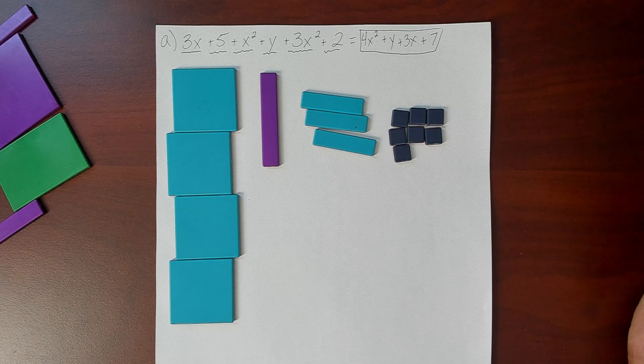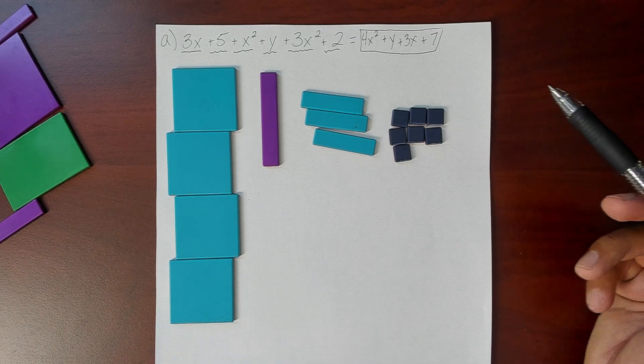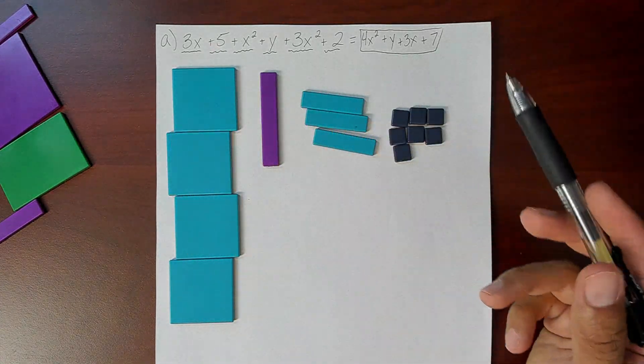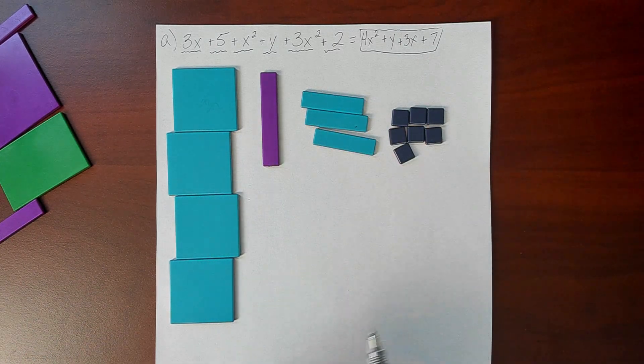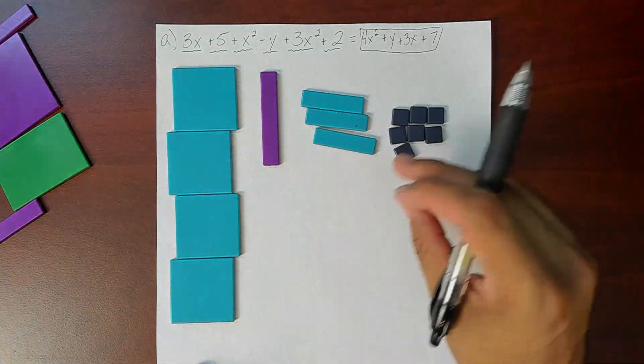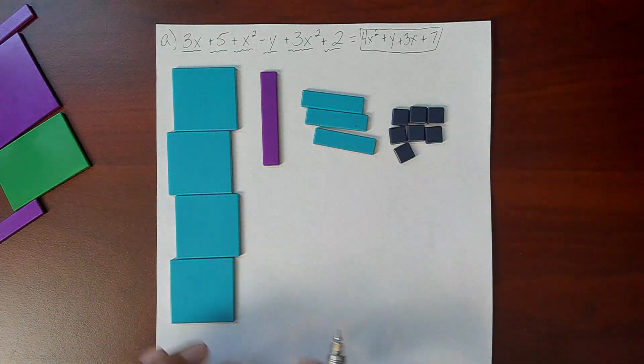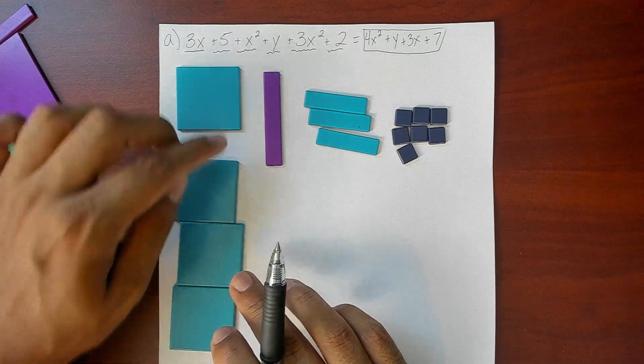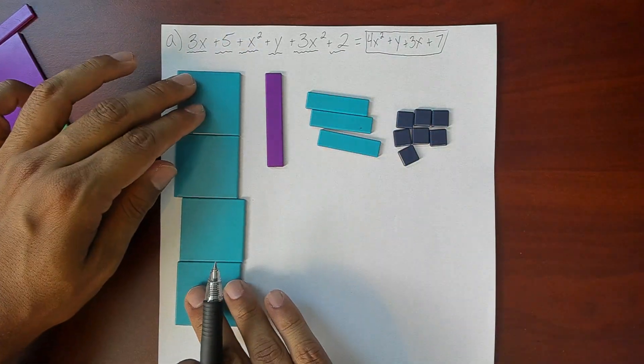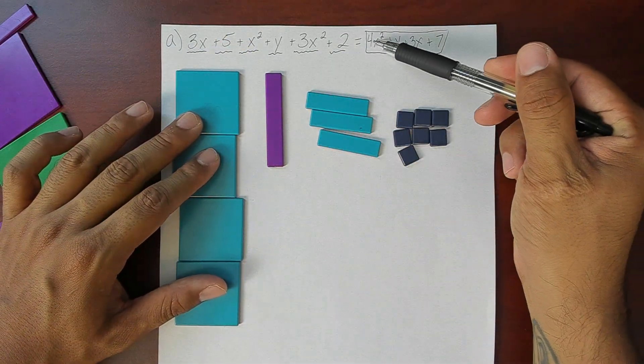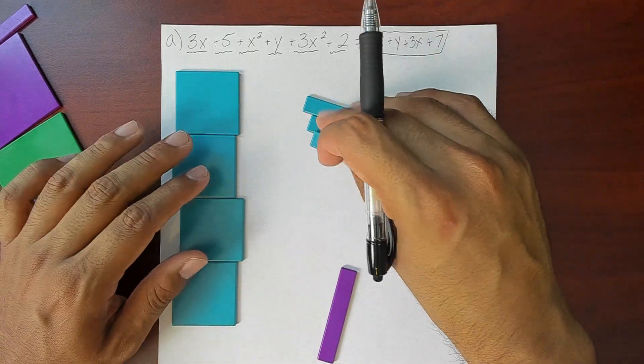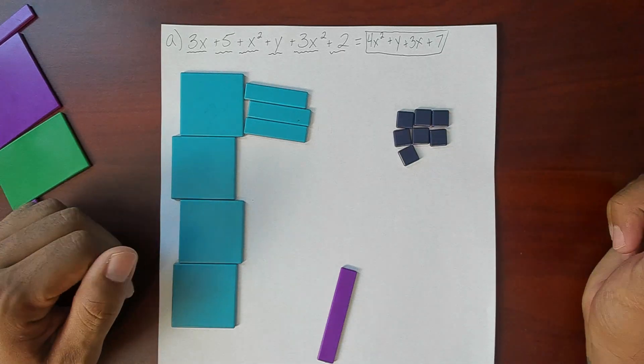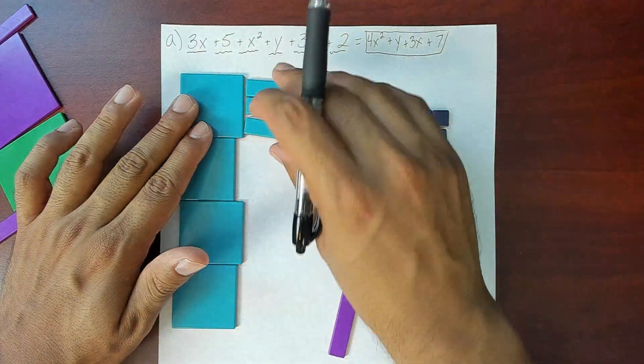This means this answer right here is our simplified expression of the one we started with. All we did here is we combined any like terms, or basically any like tiles together. And that's why algebra tiles are so nice because you can group them and you can visually see why an x squared plus three x squared tiles they're going to make four x squared tiles.